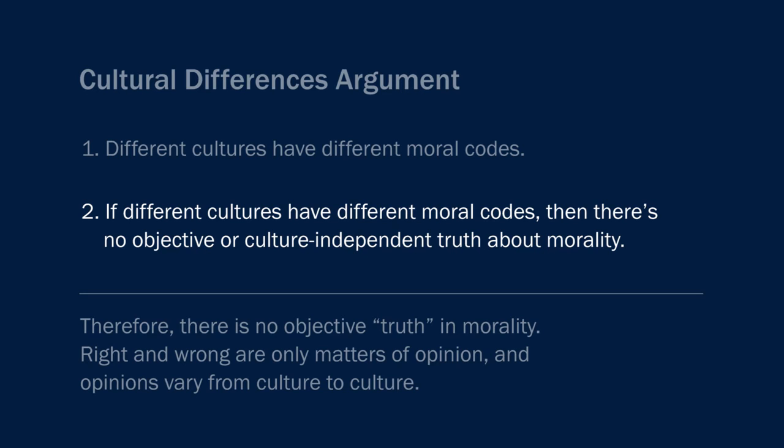For one thing, we can easily imagine instances where one party to a moral disagreement is simply mistaken. For example, one party to a moral dispute might lack the right kind of information or the ability to think clearly about the issue at hand in a way that is free from prejudice or bias. But if that's right, then it's hard to see how just the fact that two parties to a dispute have different perspectives should lead us to conclude that there is no perspective-independent truth of the matter.